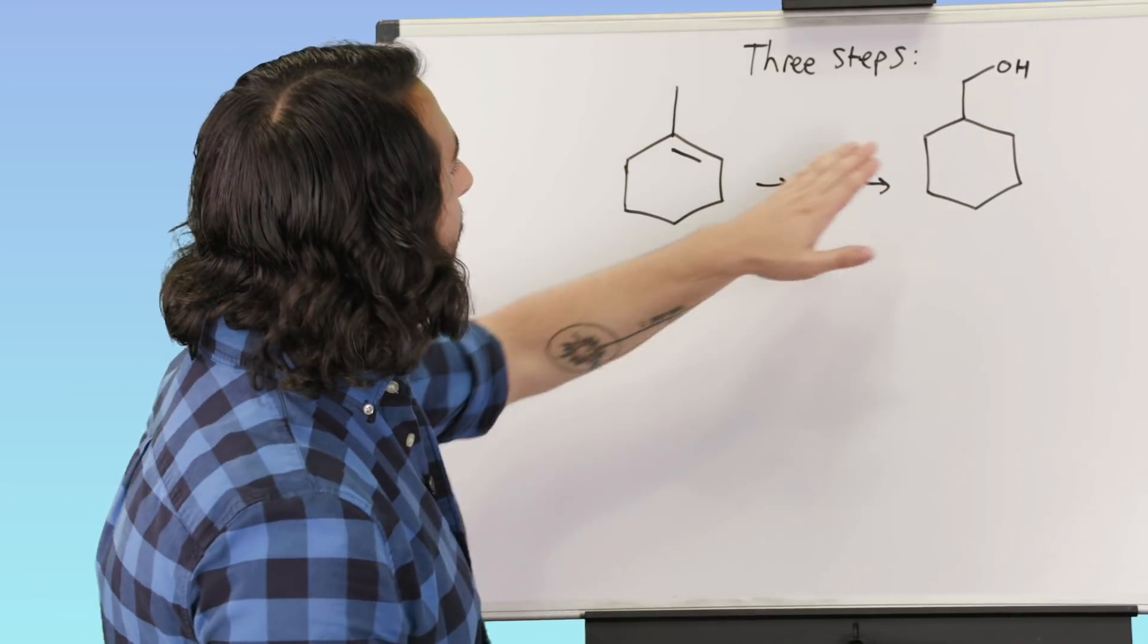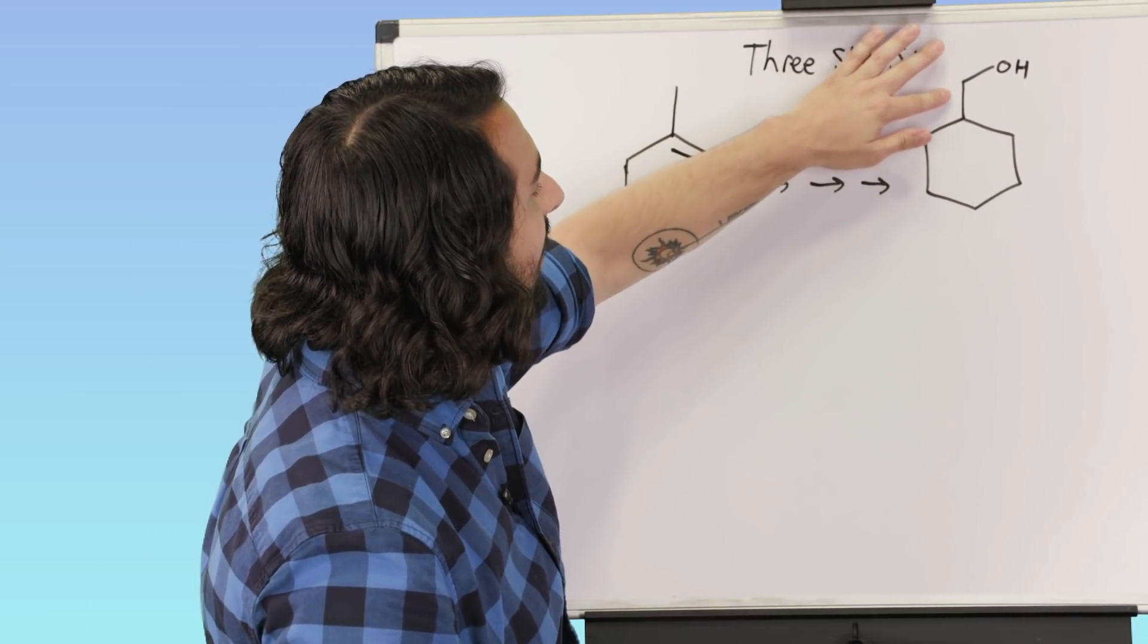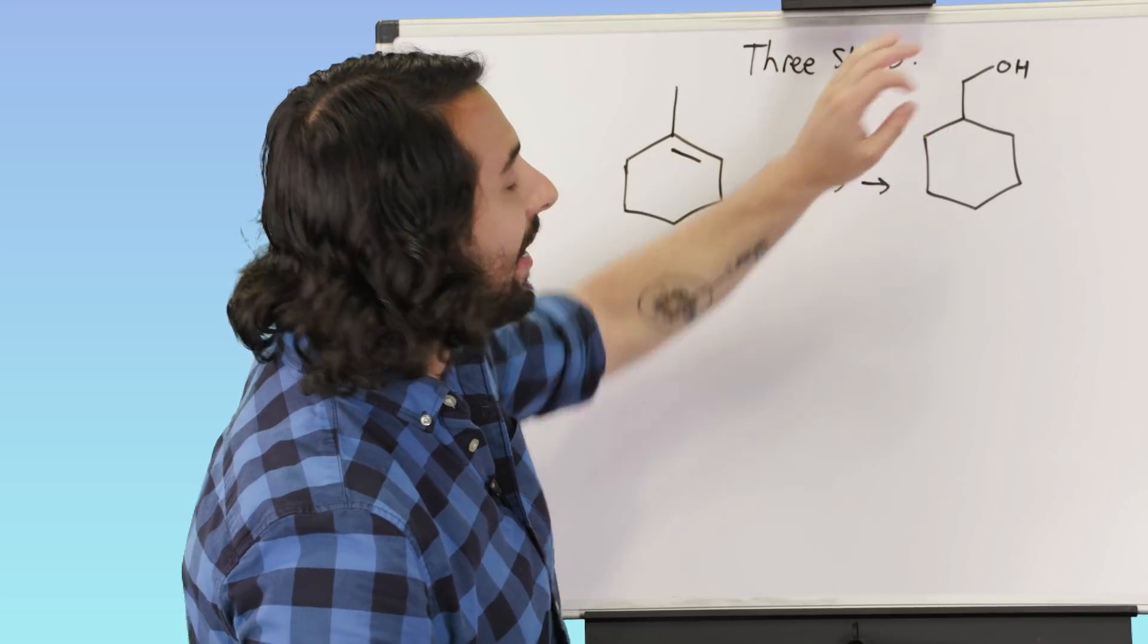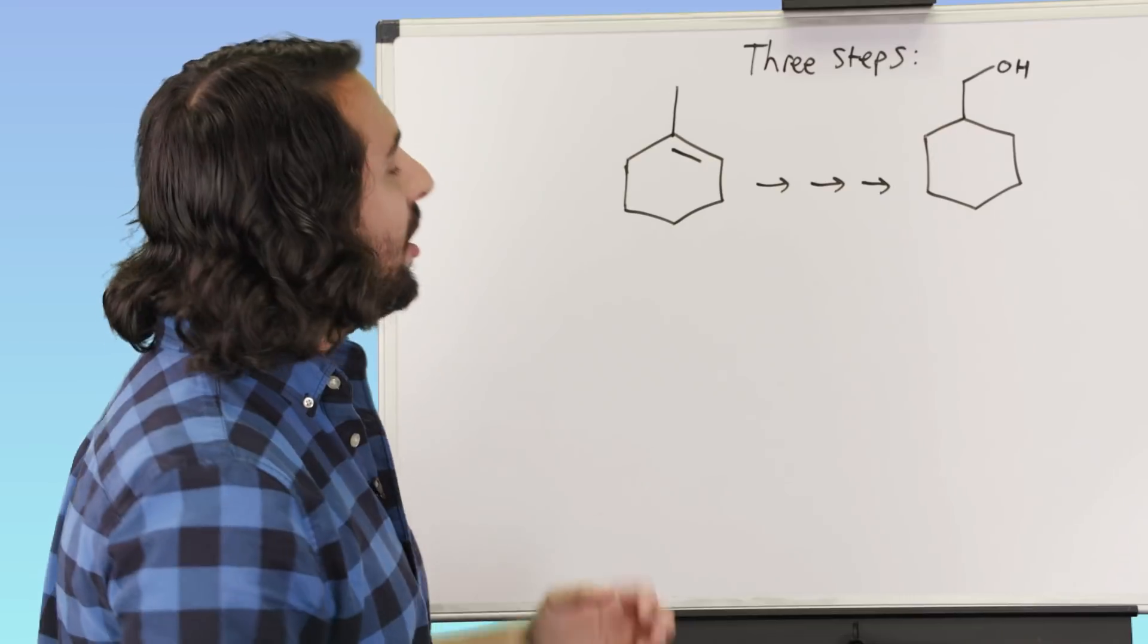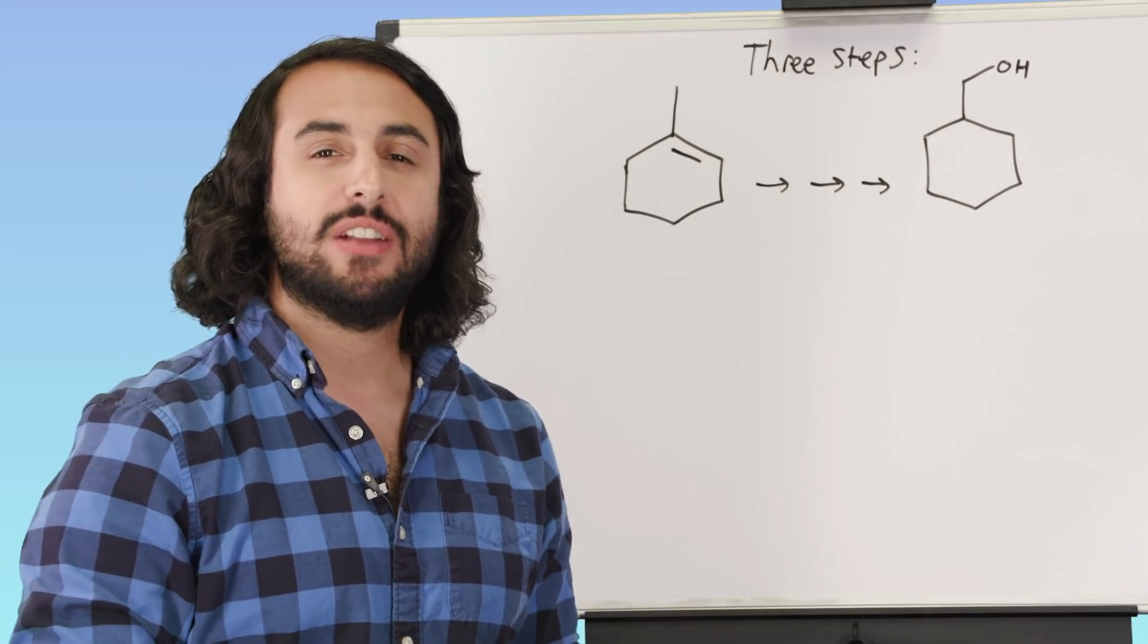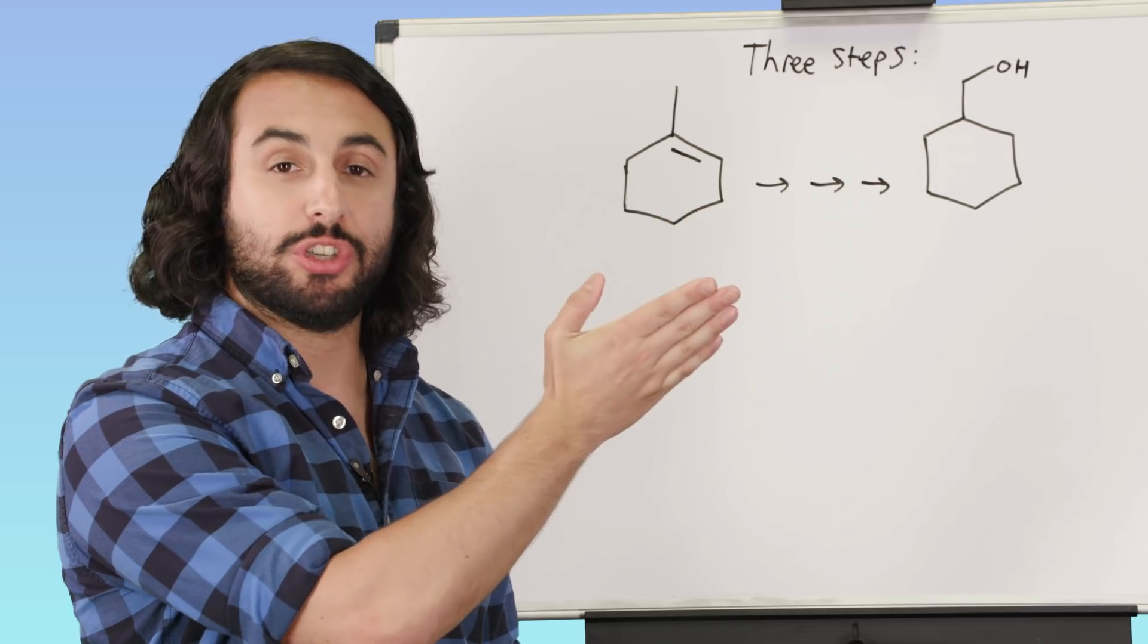What we're seeing is we could probably get this as an addition reaction if we had a pi bond here, right? If we had a pi bond there, then we'd be in business, but we don't. We have a pi bond over here. So let's see if we can figure out a way to slowly shift that functionality up towards that portion of the molecule.